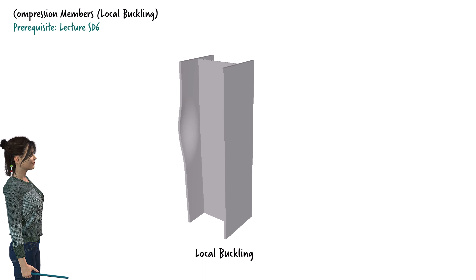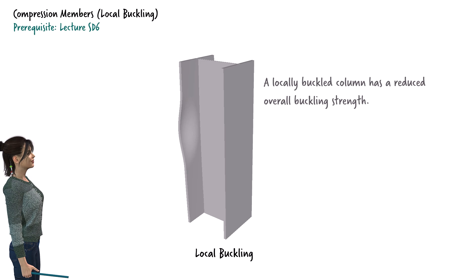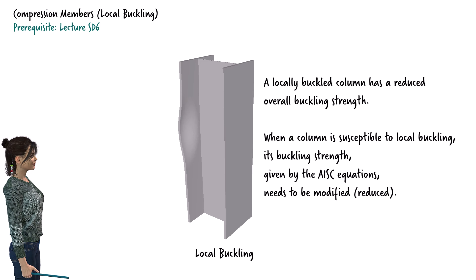Depending on the dimensions of these plates, the column can become susceptible to local buckling — that is, the member can buckle locally before the onset of overall buckling. In such cases, since local buckling renders a part of the member's cross-section ineffective in resisting the compressive force, the overall buckling strength of the column given by the AISC equations must be reduced. In this lecture, we examine the AISC local buckling provisions for the design of compression members.